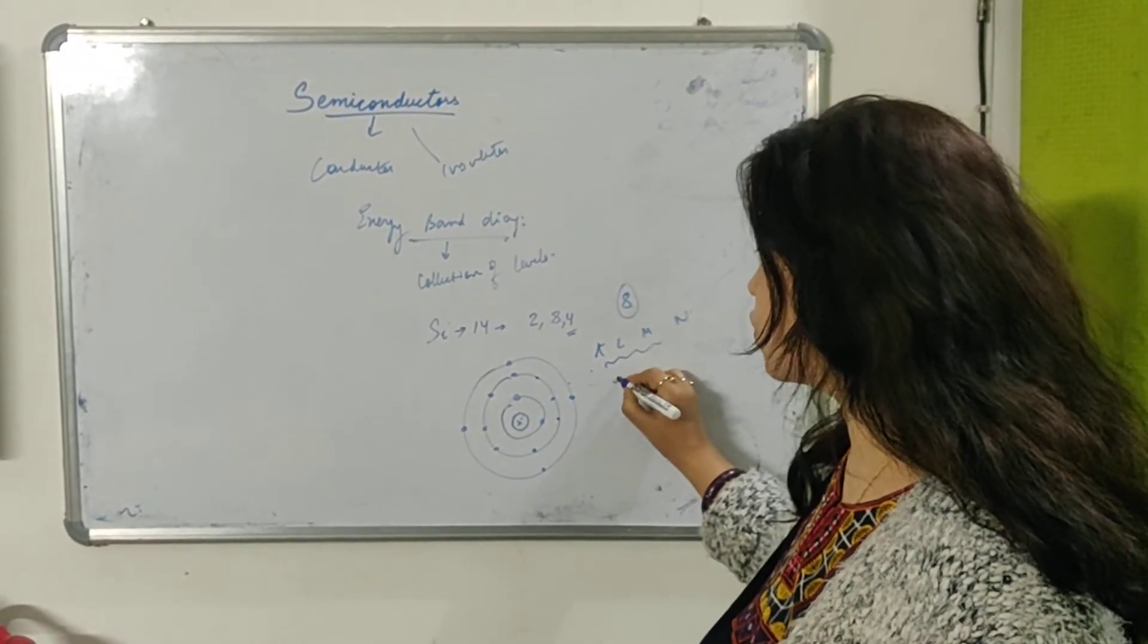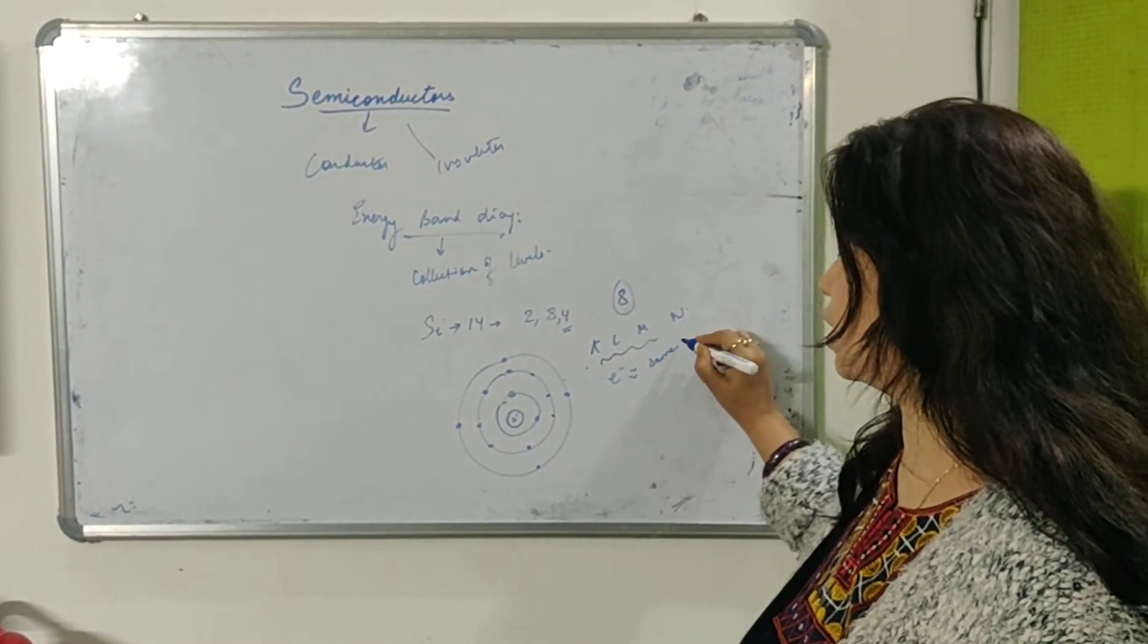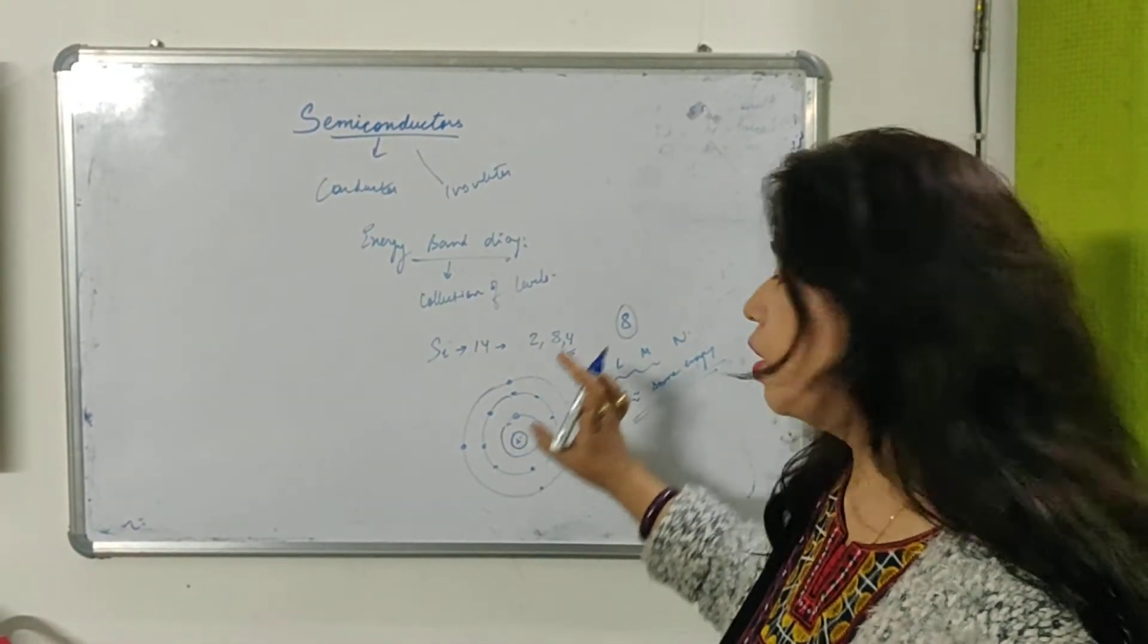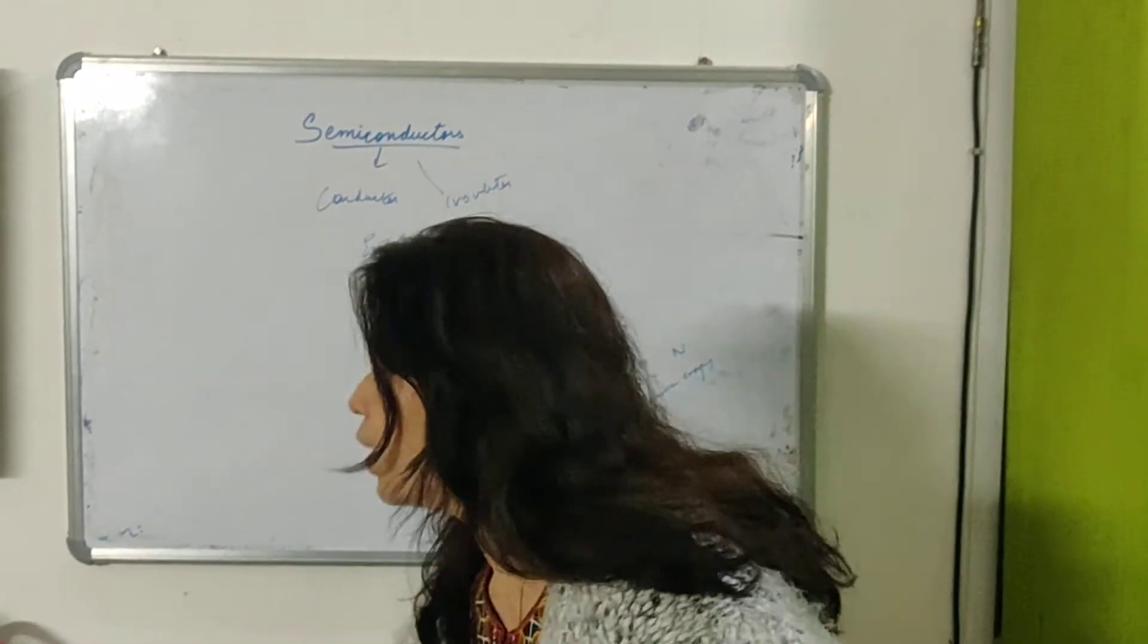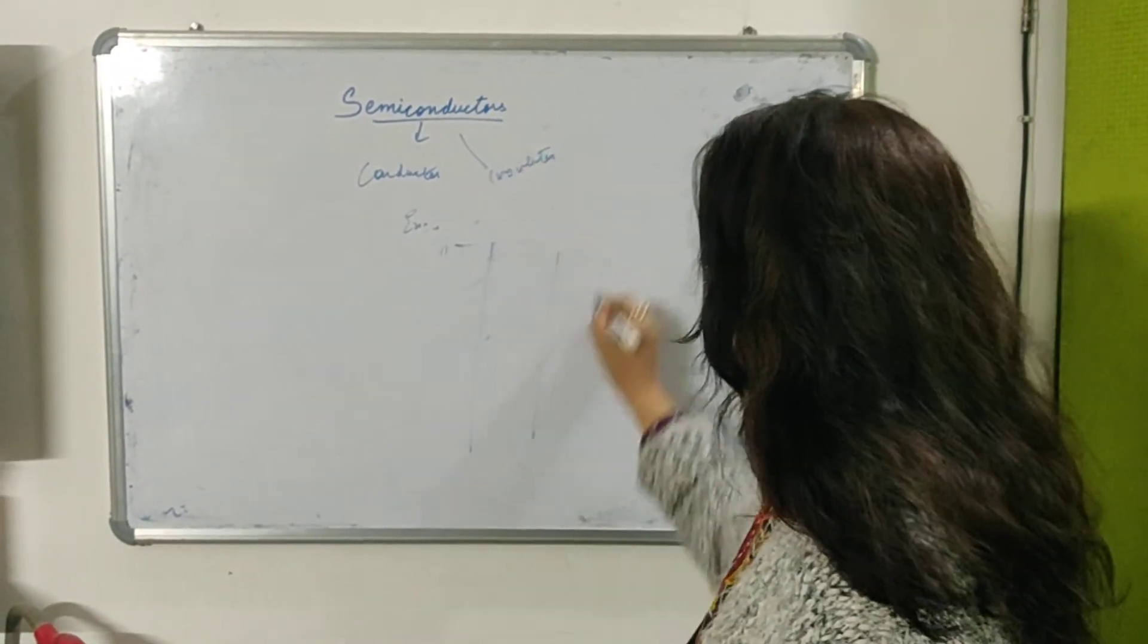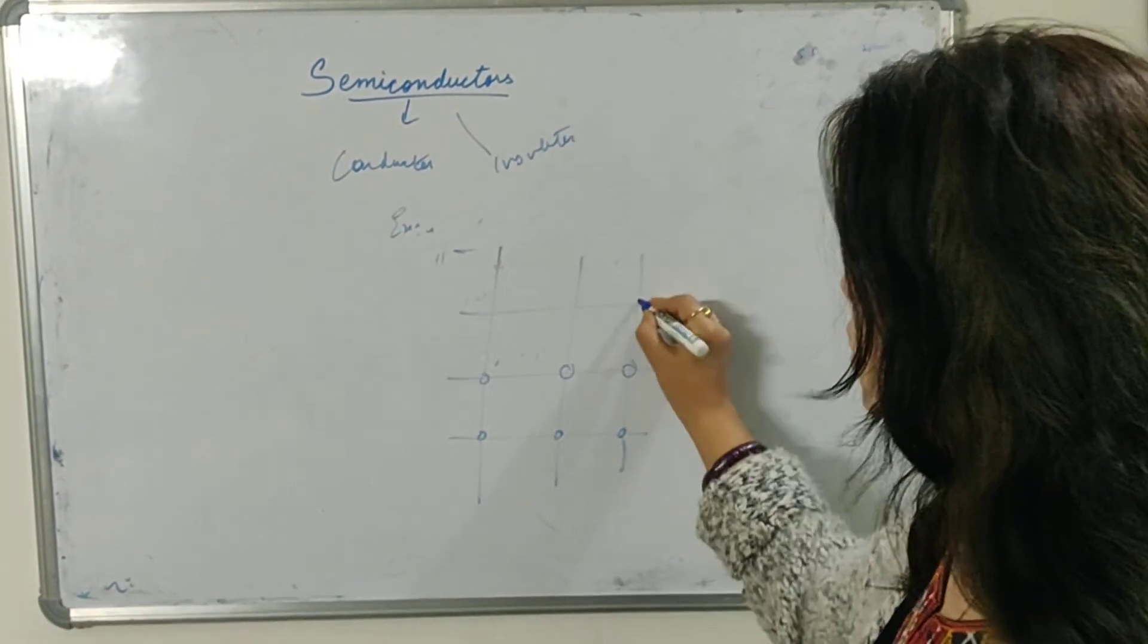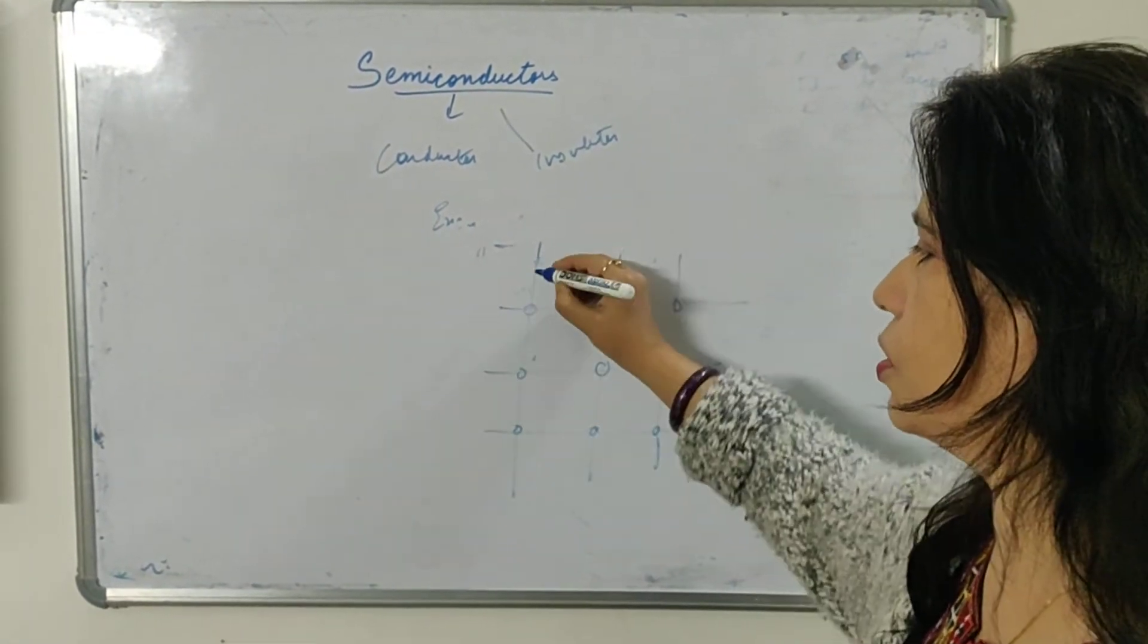Now these electrons in these shells are having almost same energy. This is a very important part. They are responsible for the valency. If I now talk about the lattice, if I arrange silicon in the lattice, what will happen here?